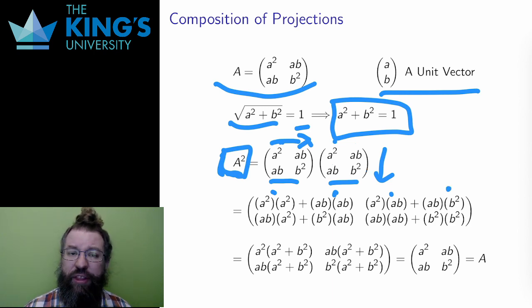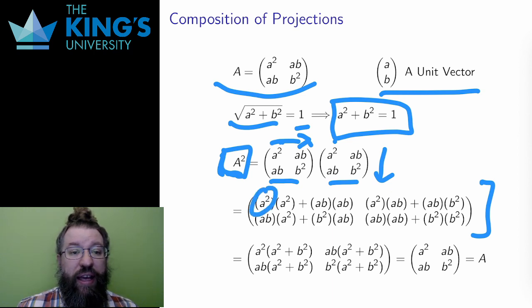Well, then I have this mess of a matrix. I want to simplify. I look to do some factoring. In the first entry, A squared is a factor of both, by taking an A out of both AB terms. Therefore, I can factor A squared out of this. In the second, AB is a factor of both, so I can factor AB out. In the third, AB is again common, so I factor it out. And in the last, by taking B out of each AB term, B squared is a factor of both pieces, so I can factor it out.